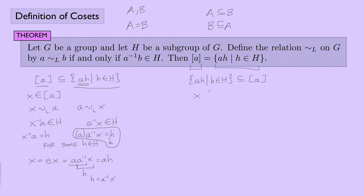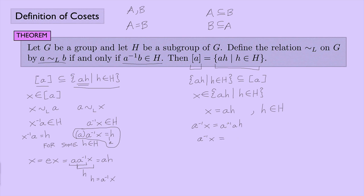Now the reverse direction: let X be an element of this set. That means X equals A times h for some little h in the subgroup H. I need to show X is in the equivalence class. To show equivalence, I look at A inverse X: that's A inverse times A times h. A inverse A is the identity, and identity times h is just h. So A inverse X equals h, which is in H. Therefore A is equivalent to X, and X belongs to the equivalence class of A.